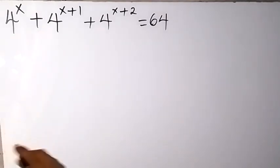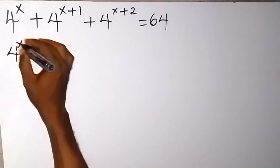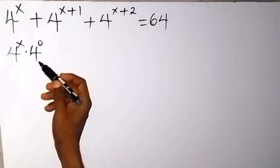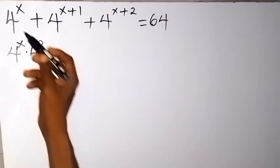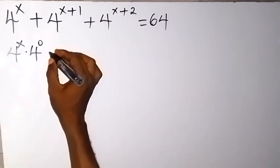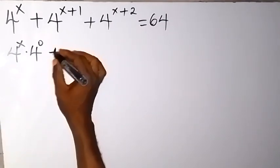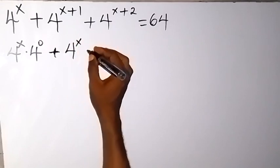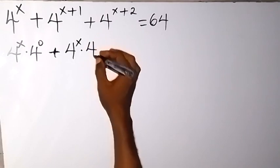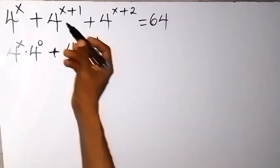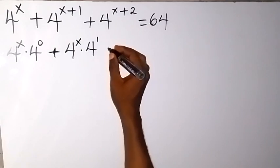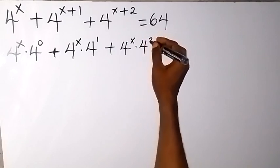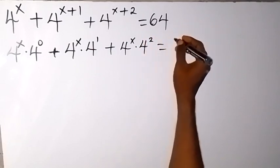Let's write this again as 4 raised to power x times 4 raised to power 0. As we know that anything raised to power 0 is 1, so this is the same thing as 4 raised to power x, then plus — when we separate this using the law of indices — we have 4 raised to power x multiplied by 4 raised to power 1, plus 4 raised to power x times 4 raised to power 2, which equals 64.